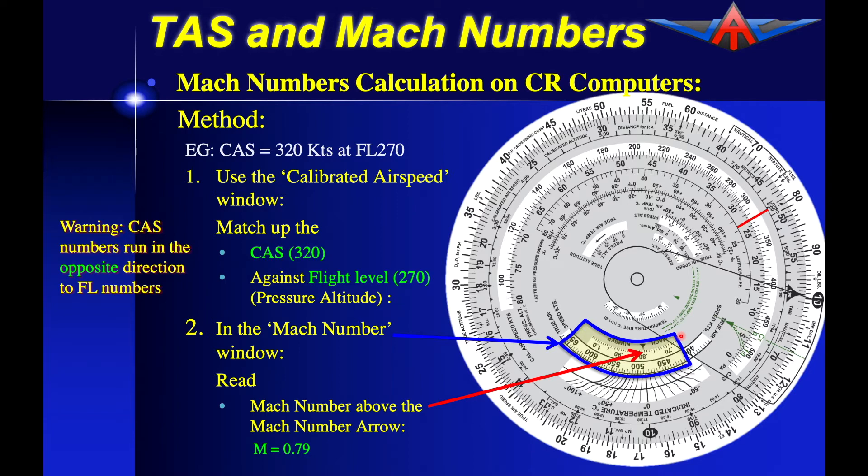This is one of the major reasons why I prefer the APR navigation computer over the CR3. The Mach numbers are much more accurately identified on the APR calculator compared to the Jeppesen.